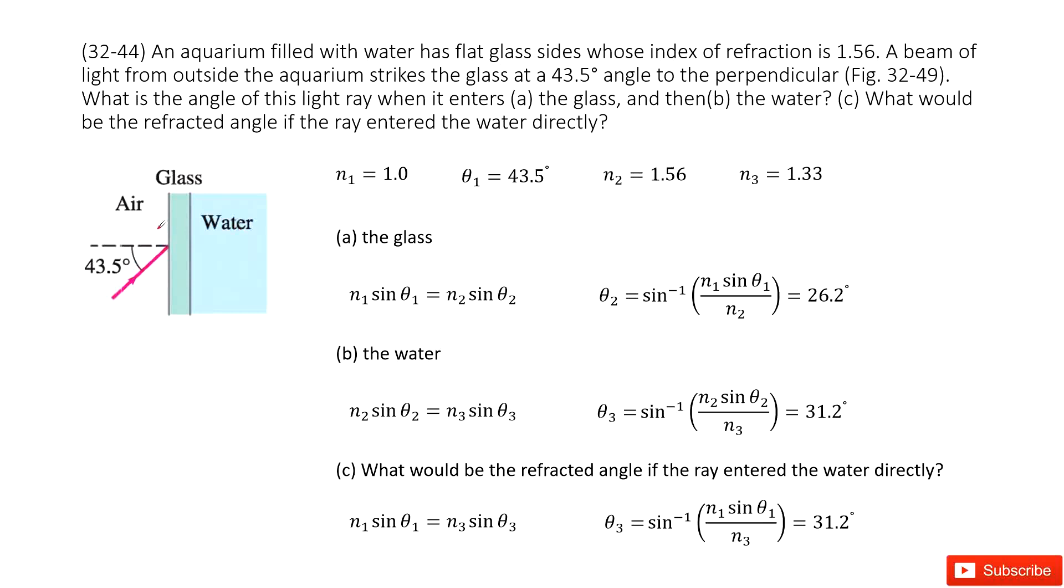You can see we have this system. The light is incident from the air. The index of refraction of air, n1, is 1.0 and the incidence angle we write as theta 1.